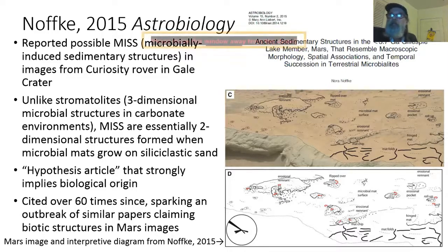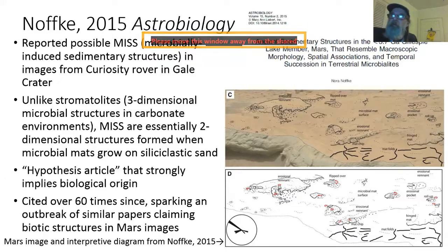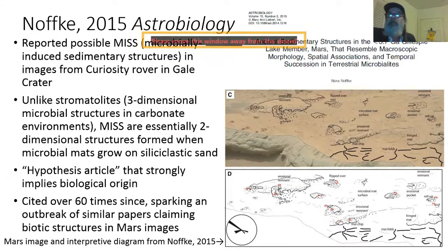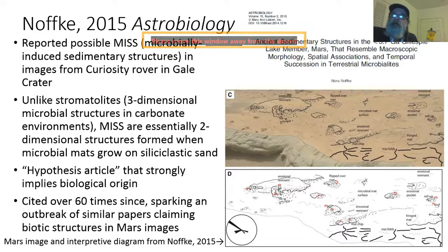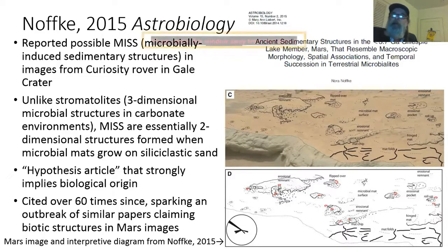In the image in the lower right, you have irregularities on the bedding surface of this sandy sediment, illustrated in an interpretive diagram treating them as ripped-up microbial mats. You'll notice leading statements like 'flipped-over mats' and 'mat chips.' This has been published as a hypothesis article, which Astrobiology publishes infrequently. If you read the paper, you get the impression it may have been the editor who insisted it be published as a hypothesis article, as the author seemed more convinced of the biogenicity of these structures than the editor was.